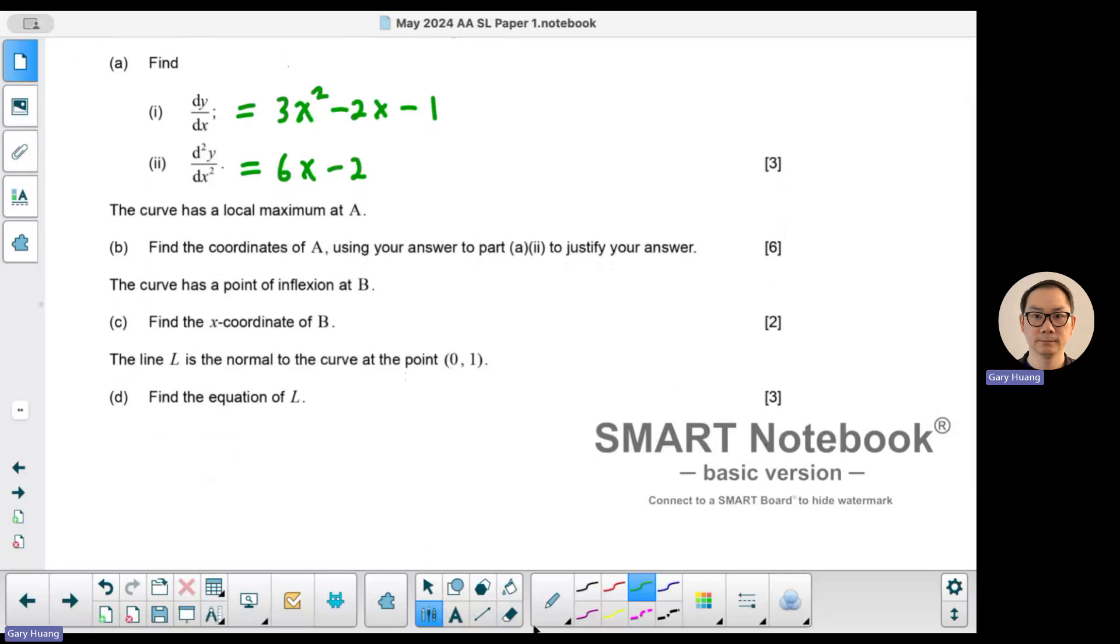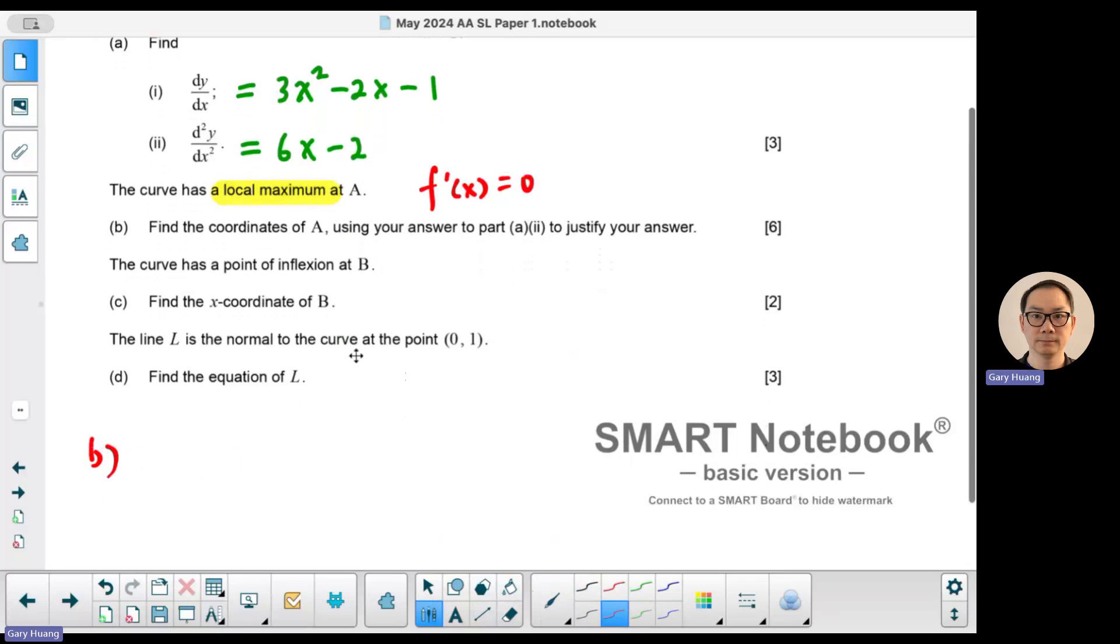Part B of the question, we're looking at local maximum. So when you see local maximum, that means we need to set the derivative, first derivative, equal to 0. So we're going to take the first derivative, which is 3x² - 2x - 1, and set it equal to 0.